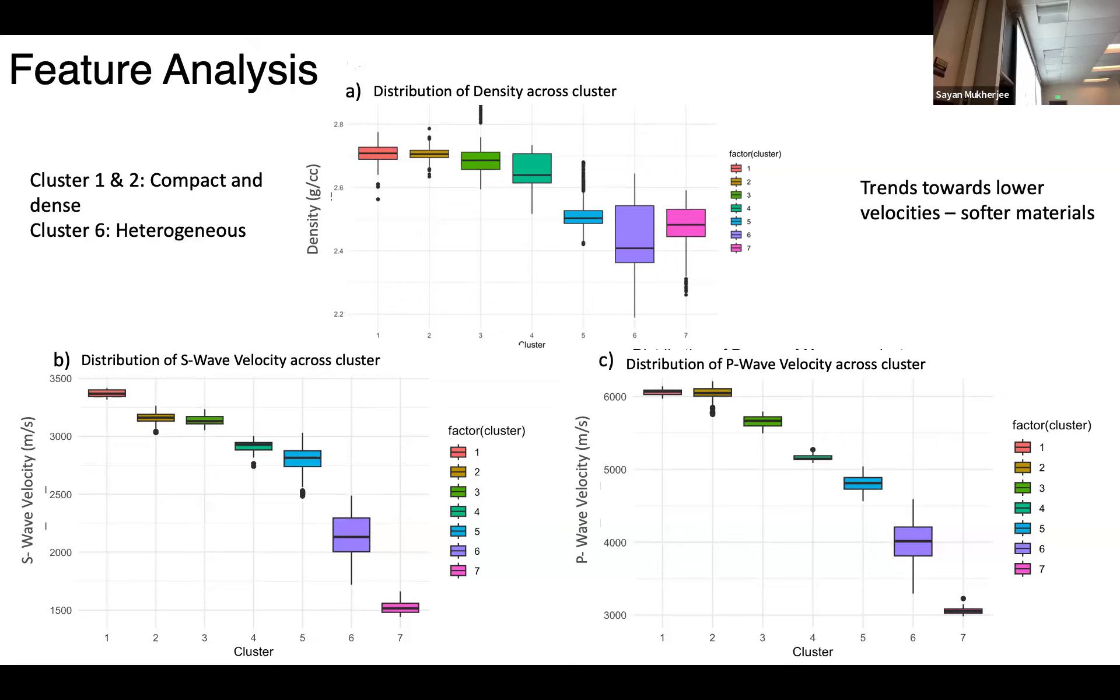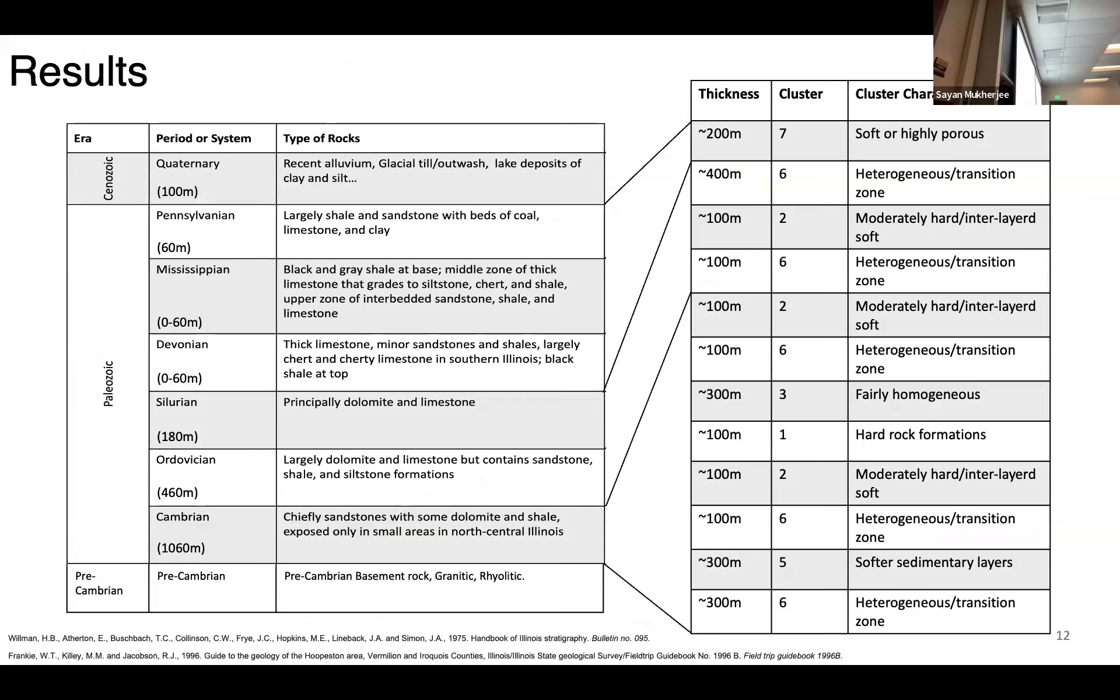For cluster six, we see a higher distribution here, also higher distribution for P wave and S wave, which means it must be a heterogeneous layer since the values are so far apart. Also, the density values, the S wave values, and the P wave values are lower, which means that it must be maybe a softer material or a softer rock. Since now we've assigned each cluster geological characteristics.